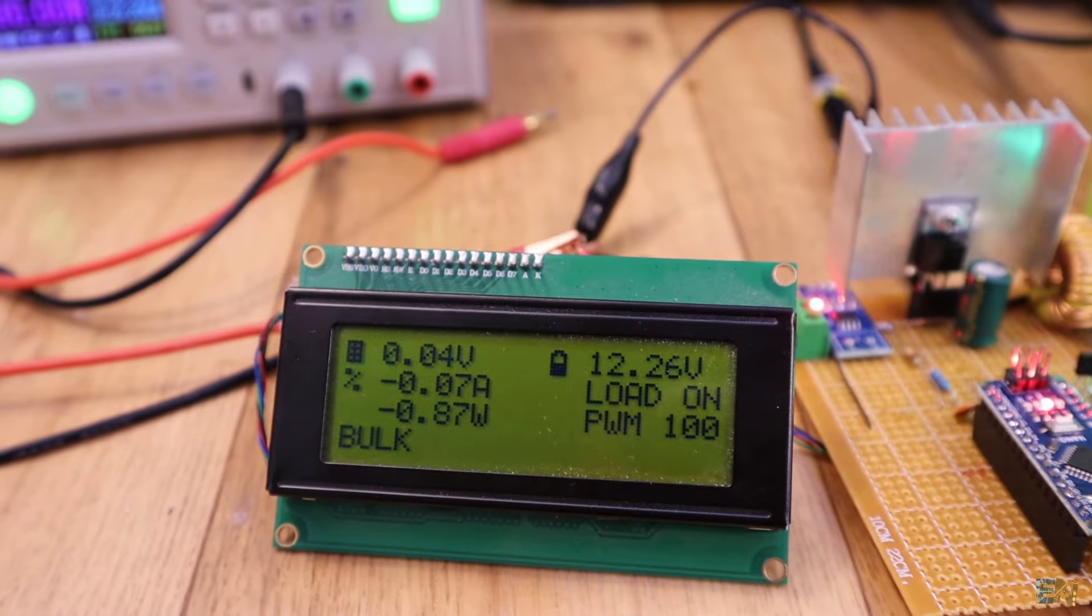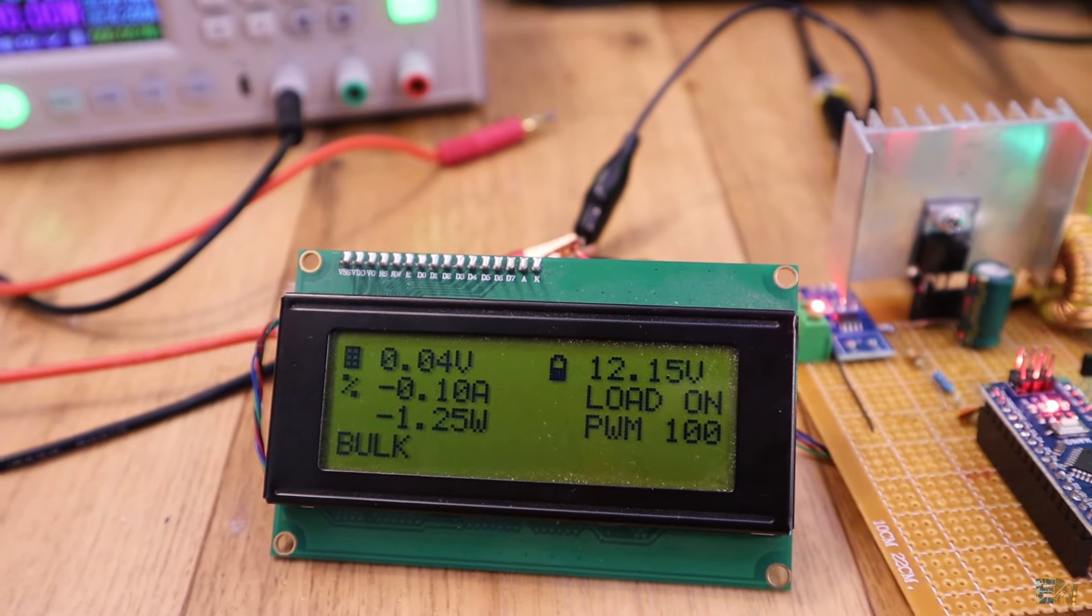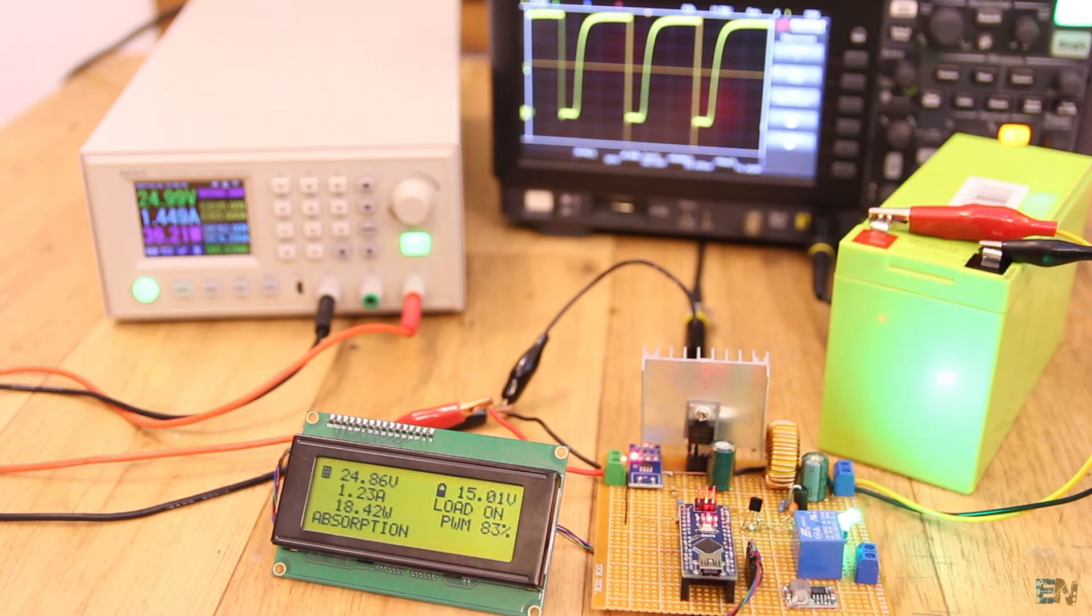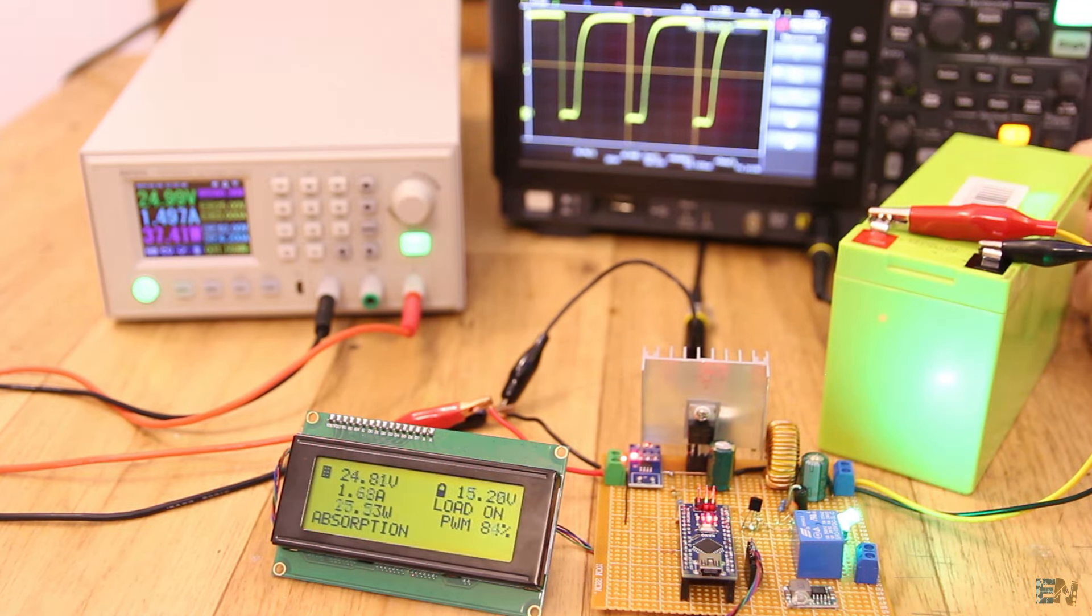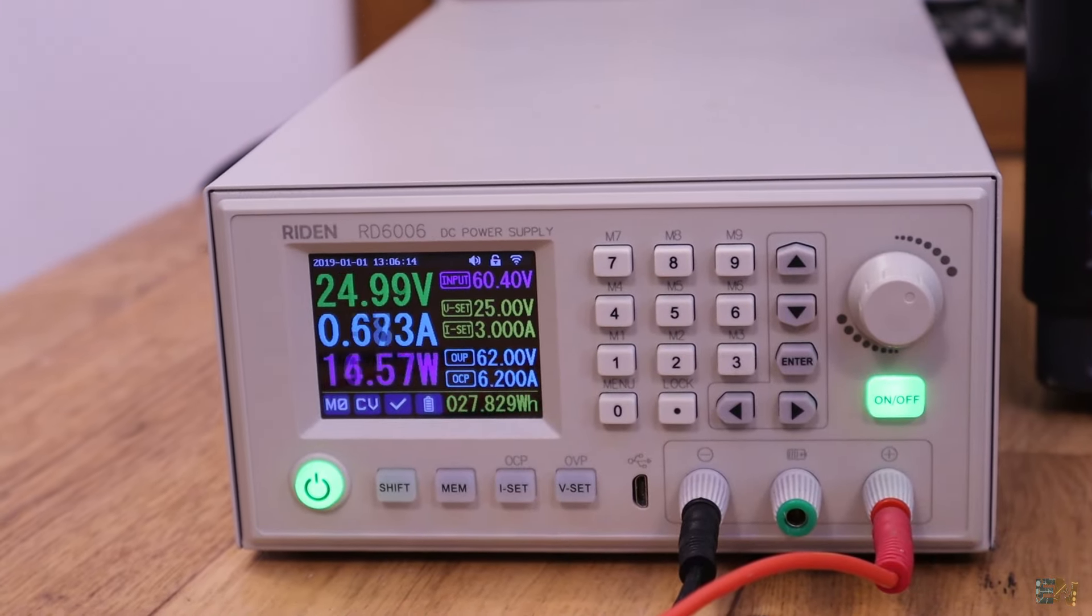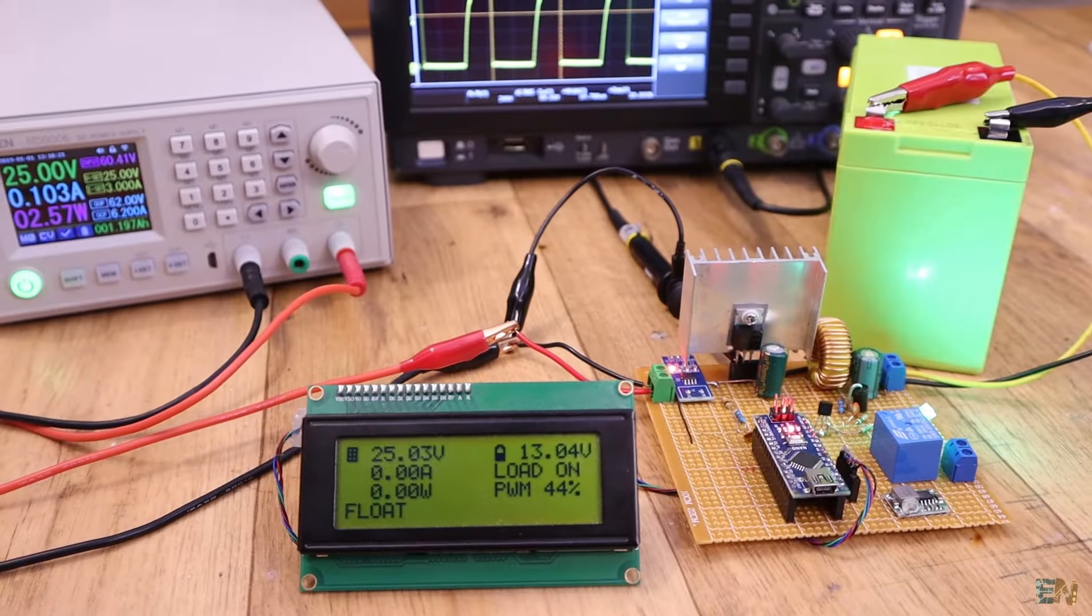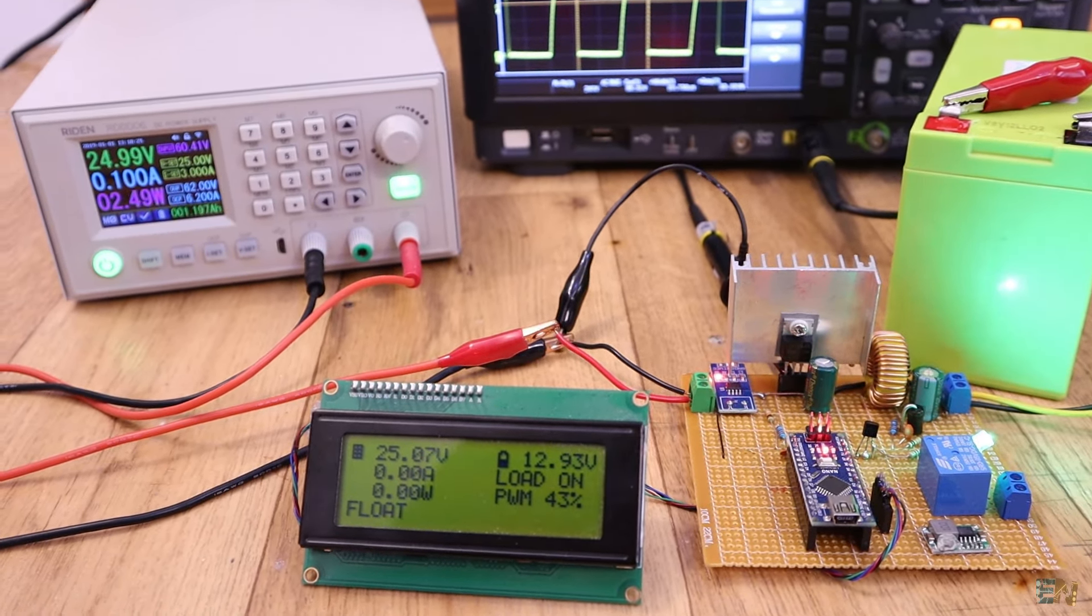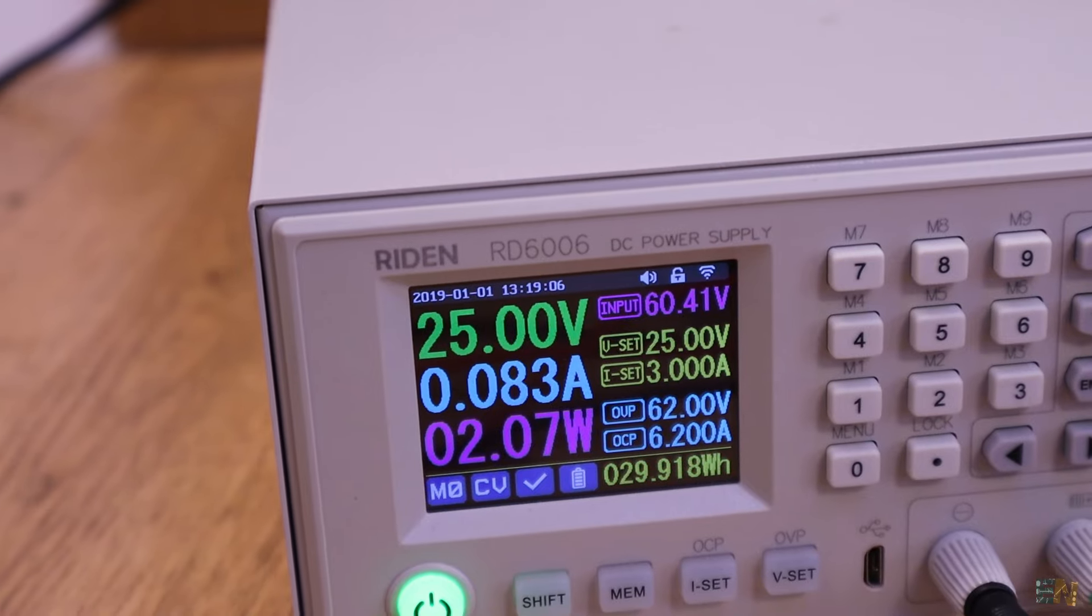After a while, when we reach 14.6V, we change to absorption and now the current is slowly dropping. In 1 hour or so, the current dropped to below 1A. Finally we get to float mode and we keep a constant 13V as defined in the code and the current is very low, just 100mA or so. So, that's the charging cycle.